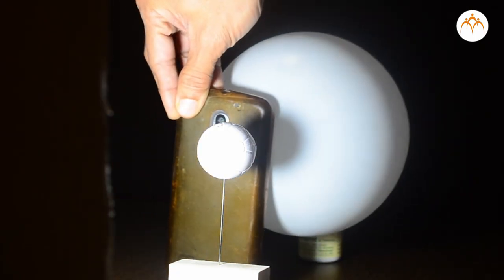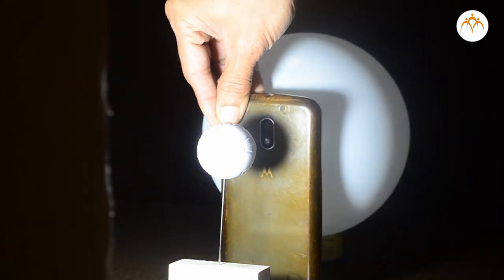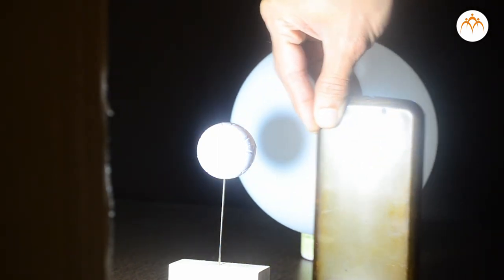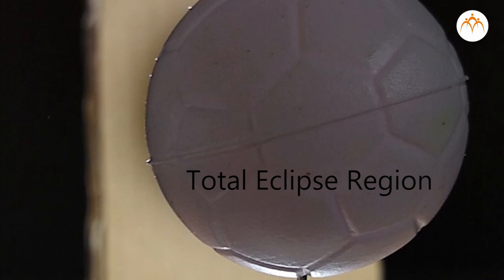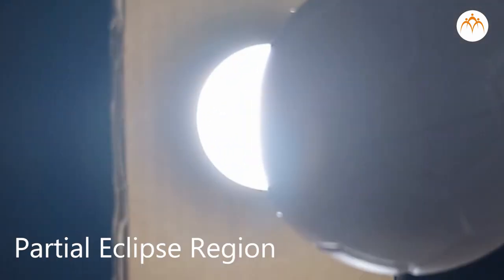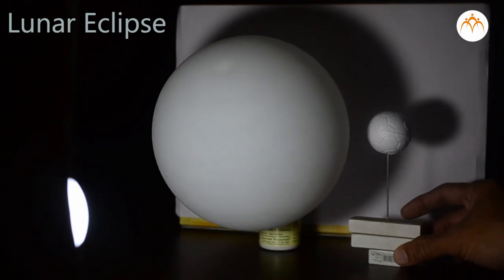We can place a mobile phone camera at the shadow region on the earth. This will help us to understand how the sun is seen from the total eclipse region and partial eclipse region. Now let us place the moon on the other side of the earth.